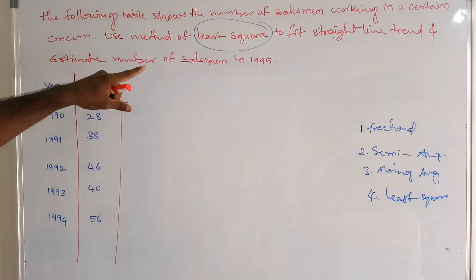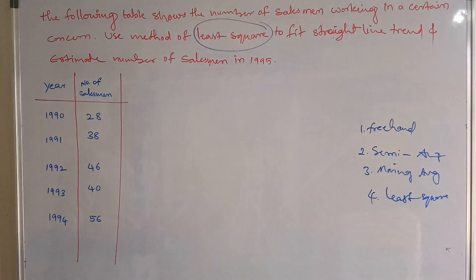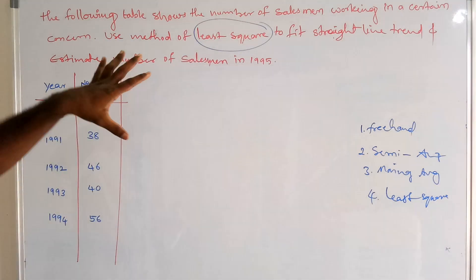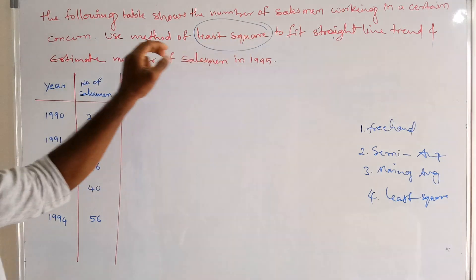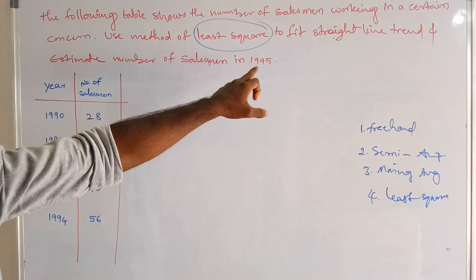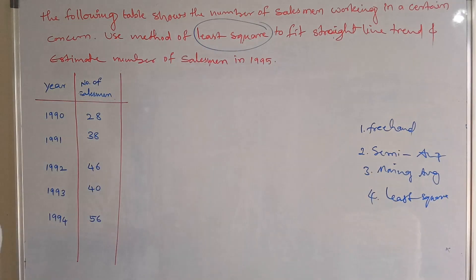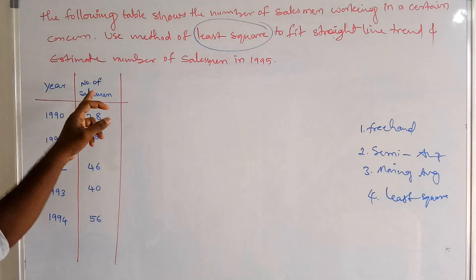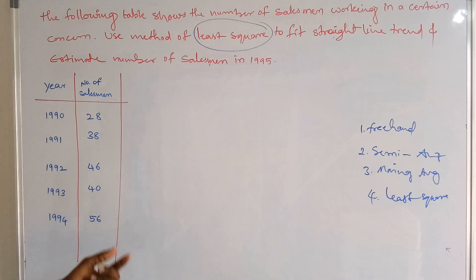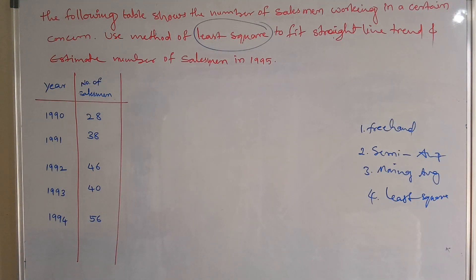This problem belongs to the least square method. The following table shows the number of salesmen working in a certain concern. Use the method of least squares to fit a straight line trend and estimate the number of salesmen in 1995. The data covers years 1990, 91, 92, 93, and 94, with salesmen counts of 28, 38, 46, 40, and 56.